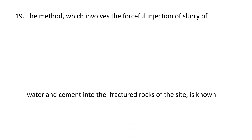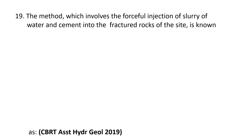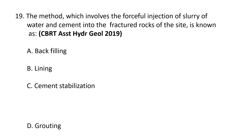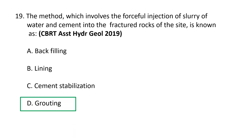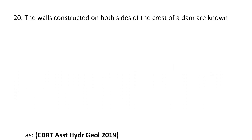Next question: the method which involves the forceful injection of a slurry of water and cement into the fractured rocks of a site is known as — A) Backfilling, B) Lining, C) Cement stabilization, and D) Grouting. The correct option is grouting. Grouting involves the injection of appropriate materials under pressure into certain parts of the Earth's crust through specially constructed holes or openings, in order to fill and seal voids, cracks, seams, fissures, or other cavities in soils or rock strata. D is the correct option.